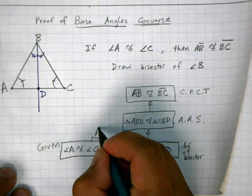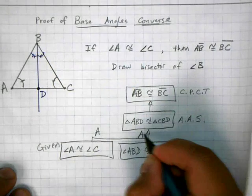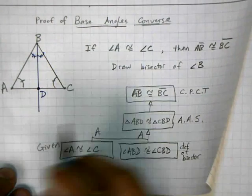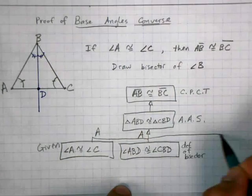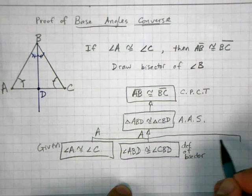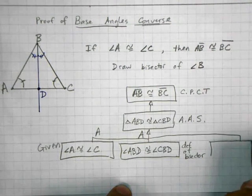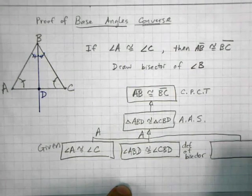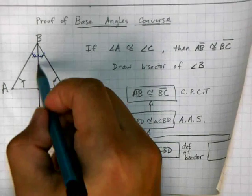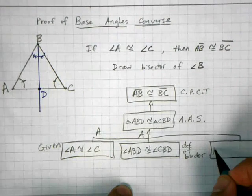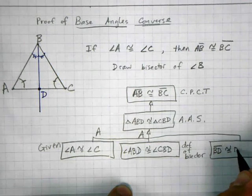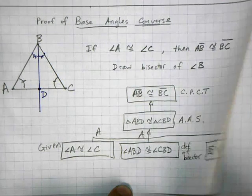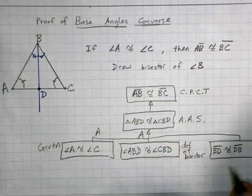So this gives me an angle, this gives me an angle, and I need one more statement using the side. And the statement that I'm going to get from here is using this line down the middle here. I can say that BD is congruent to DB. And my reason is that it's reflexive.